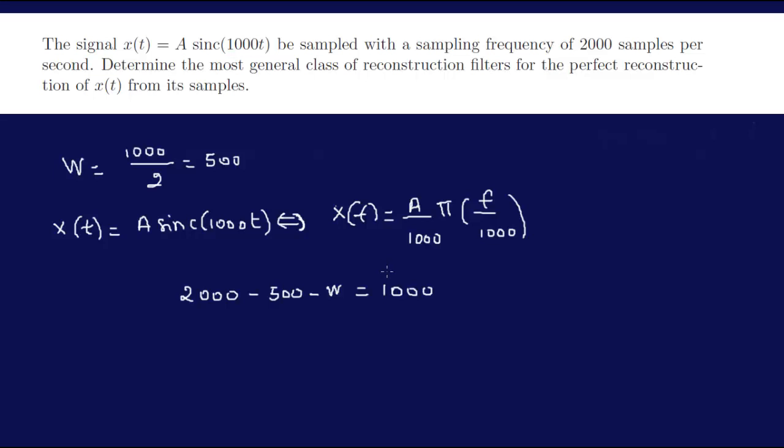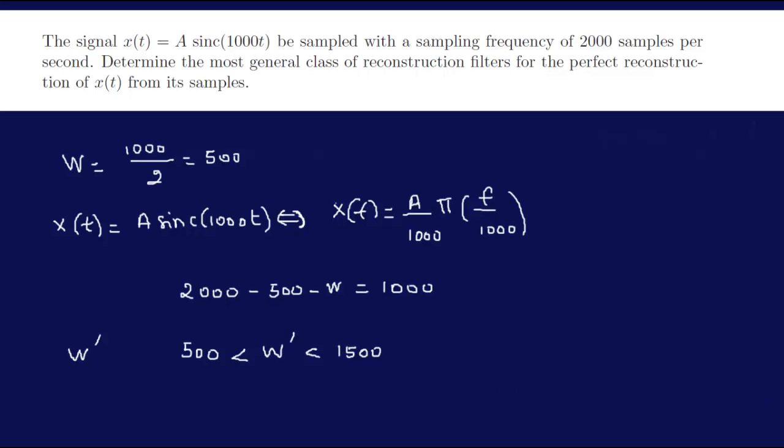So the reconstruction filter now should have a bandwidth, let's call that maybe W prime. W prime should be between 500 and the sampling 1500, minus the bandwidth. We are trying to find a filter that basically satisfies this.